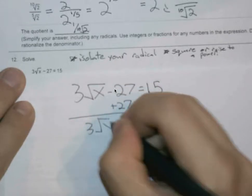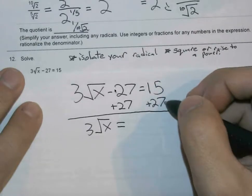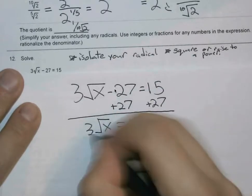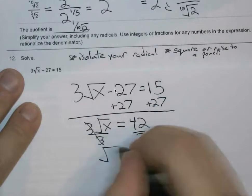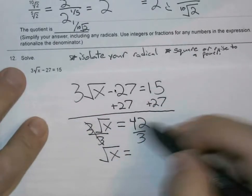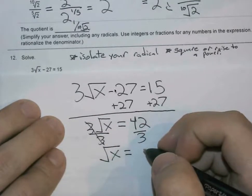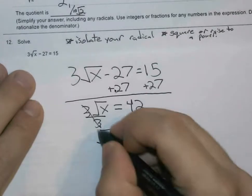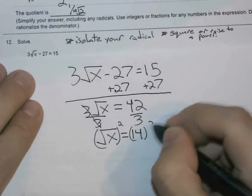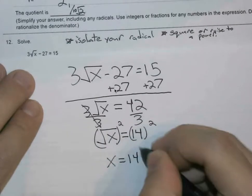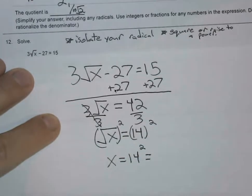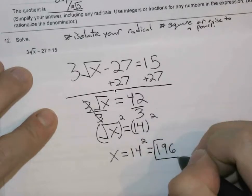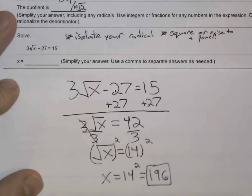This leaves us with 3 square root of x equals 15 plus 27, which gets us 42. Divide both sides by 3. We now are left with the square root of x equals 42 over 3, which is 14. Square both sides to get rid of that radical. x is equal to 14 being squared, which is 196. And that would be the only answer. There's no need for plus minus here, because, again, we're squaring.